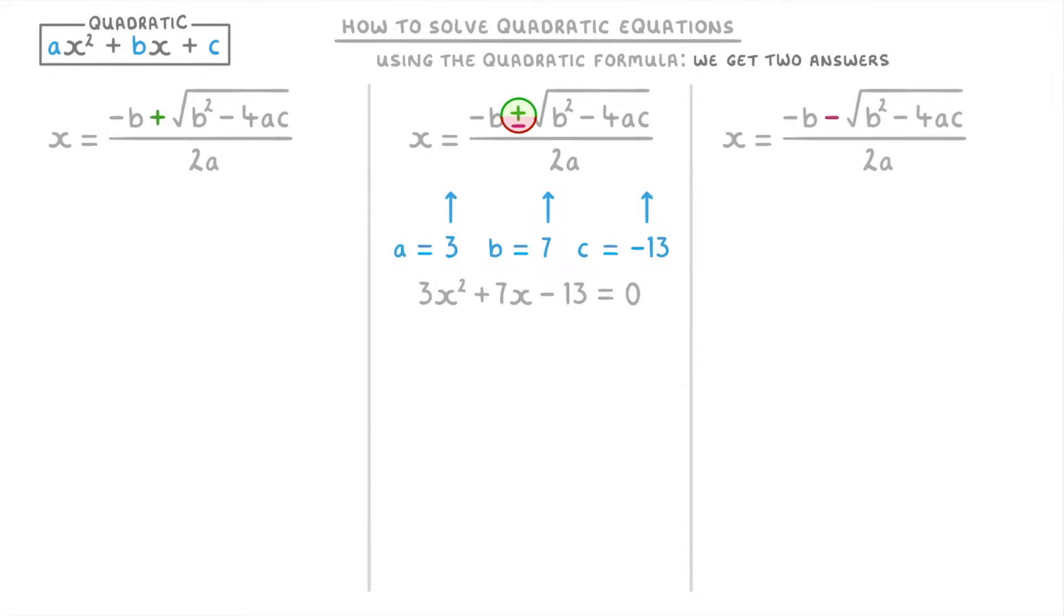So if we start with the plus sign one, we'd get x = -7 plus the square root of 7² - 4×3×(-13), all divided by 2×3. And then for the minus version we get exactly the same thing except we're subtracting the big square root.